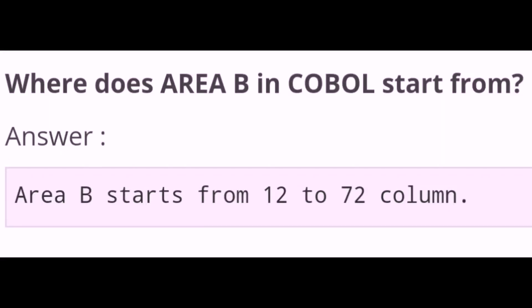Where does Area B in COBOL start from? Area B starts from column 12 to 72.